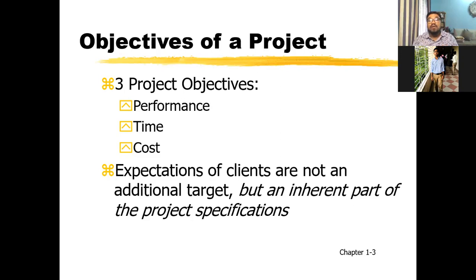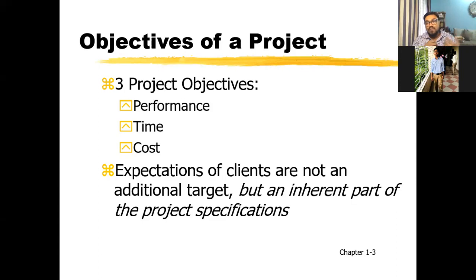Organizations take projects because of achieving three objectives. One is performance — we want to see that our task really maintains all the qualities. The second one is time — we want to accomplish our task within a timeframe. And the third one is cost — we want to accomplish our task within the budget or cost that is allocated for the project. These three objectives we must keep in mind before we enter into a project.